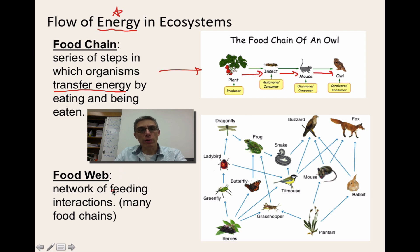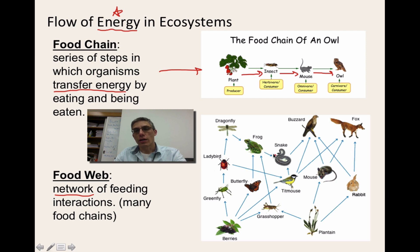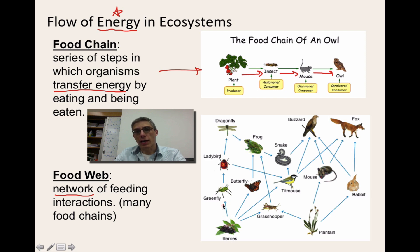A food web is primarily just a network of feeding interactions — lots of different food chains put together into one system. The direction of the arrow indicates the direction of energy flow. For example, the arrow pointing from the frog to the snake implies that the snake is going to eat the frog, and the energy from that frog is going to be passed on to the snake. The arrow pointing from the berries to the green fly means all the energy in those berries is going to be passed on to that green fly.